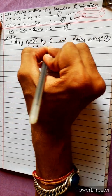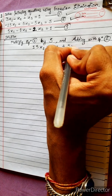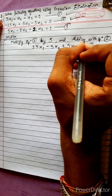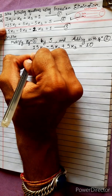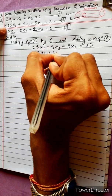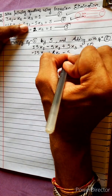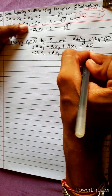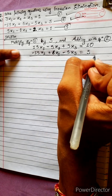15x1 minus 5x2 plus 5x3 equals 50. Now adding with equation 2: minus 15x1 plus 6x2 minus 5x3 equals 5.